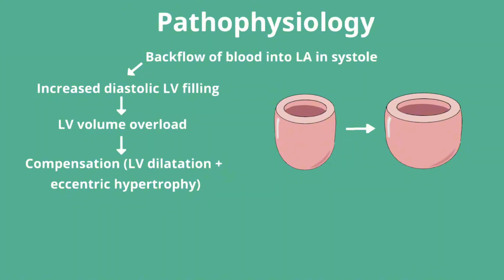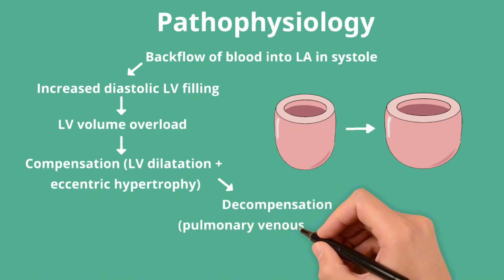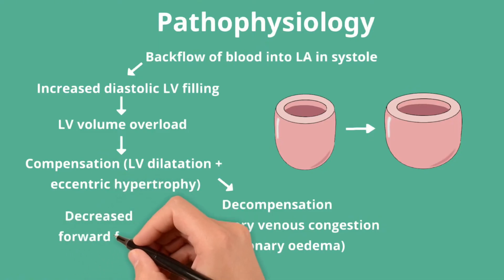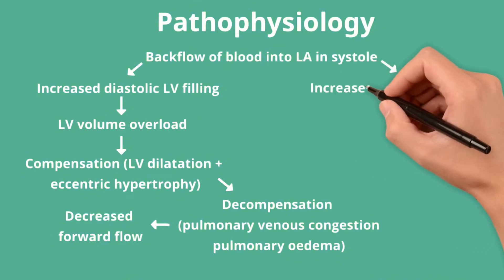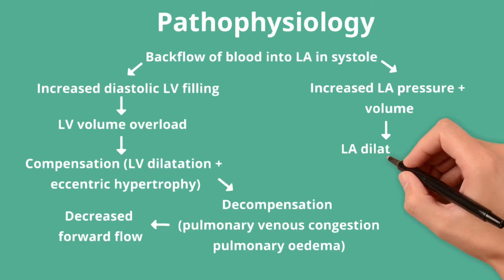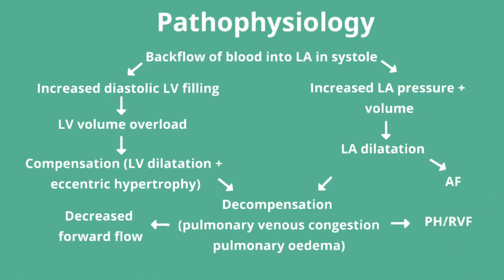Eventually, this mechanism reaches its limit, leading to decompensation, LV systolic impairment, pulmonary venous congestion and impaired forward flow. Additionally, the increased volume of blood in the left atrium leads to an increased left atrial pressure. This causes left atrial dilatation, which can lead to atrial fibrillation. Over time, pulmonary venous hypertension can cause pulmonary arterial hypertension and, in turn, right ventricular failure.